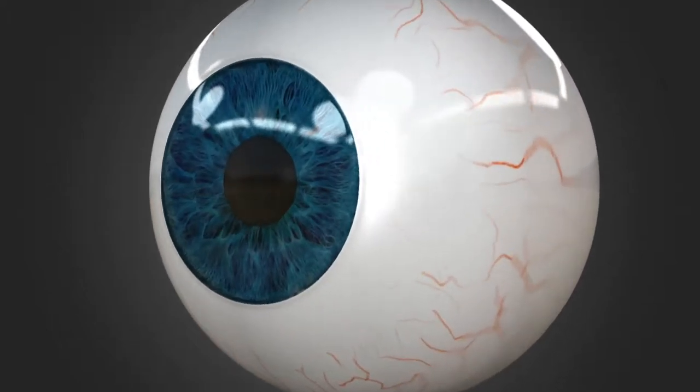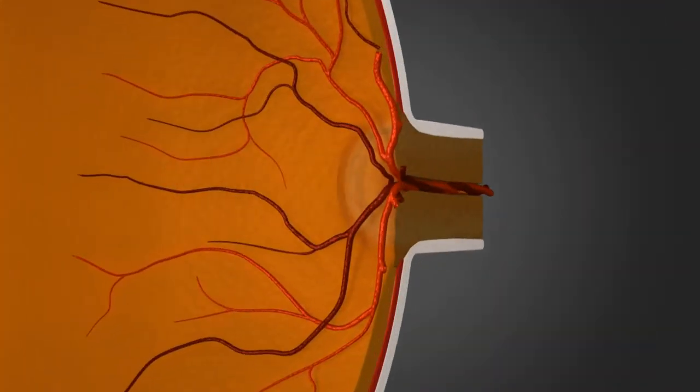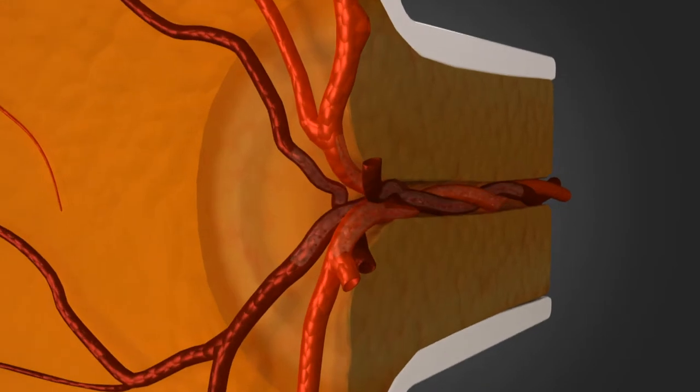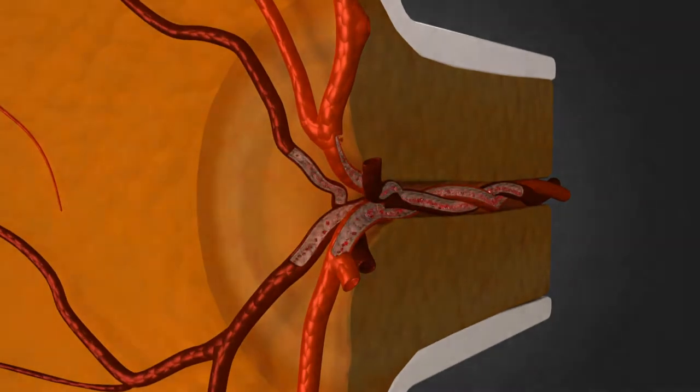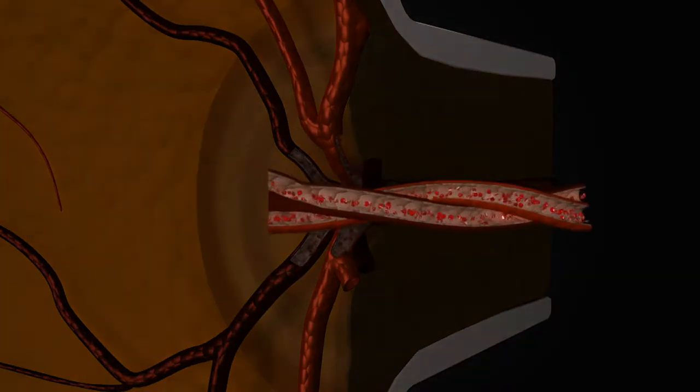The cause of a central retinal vein occlusion lies in the close relationship that exists between an artery, which brings oxygenated blood into the eye, and the vein, which drains blood out of the eye.